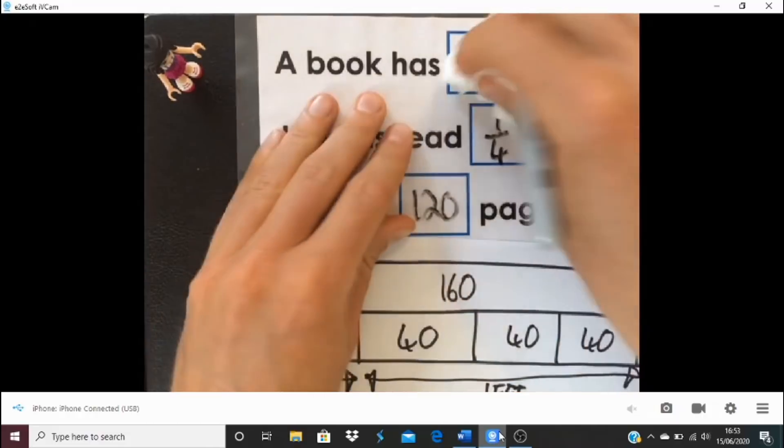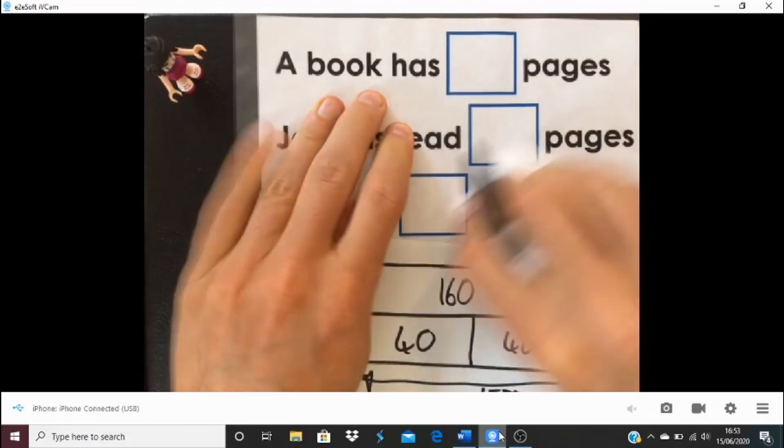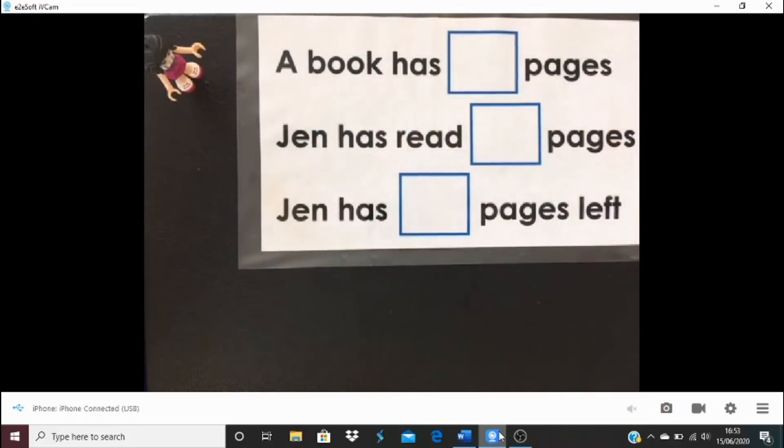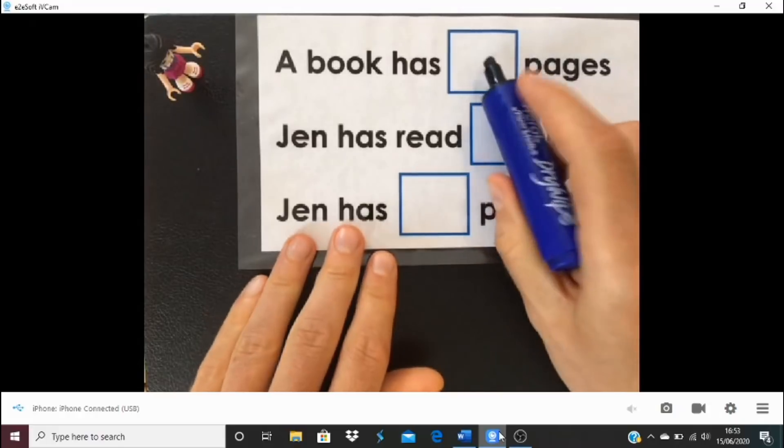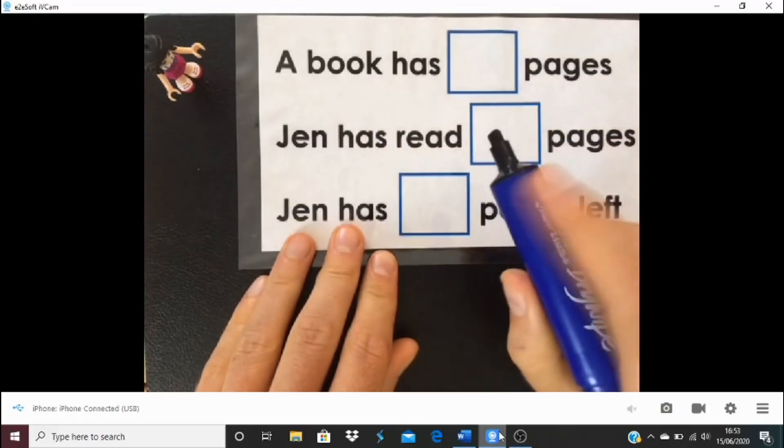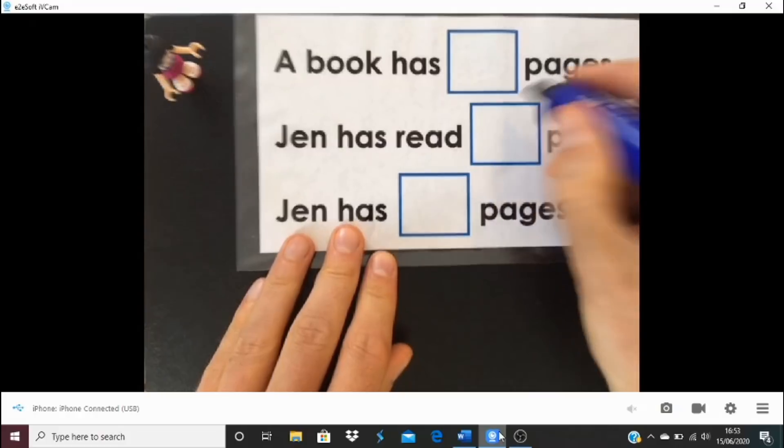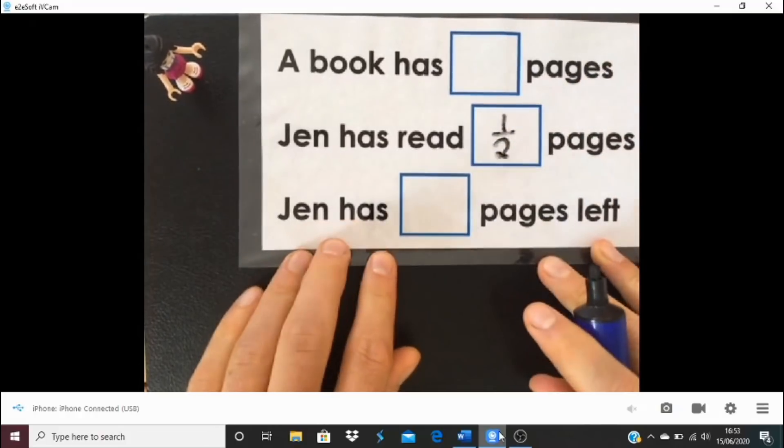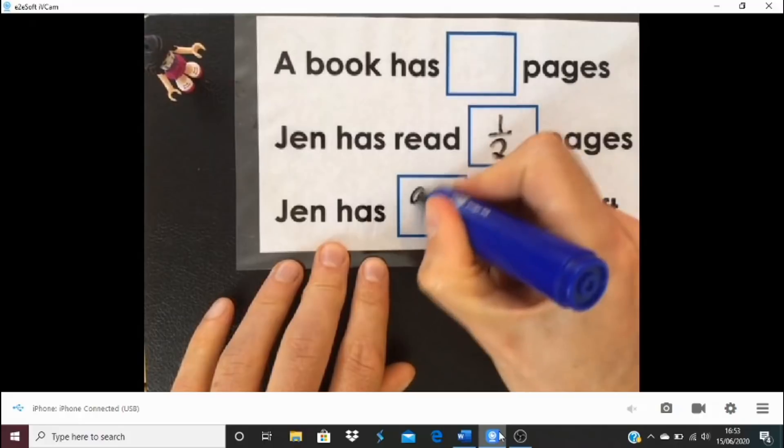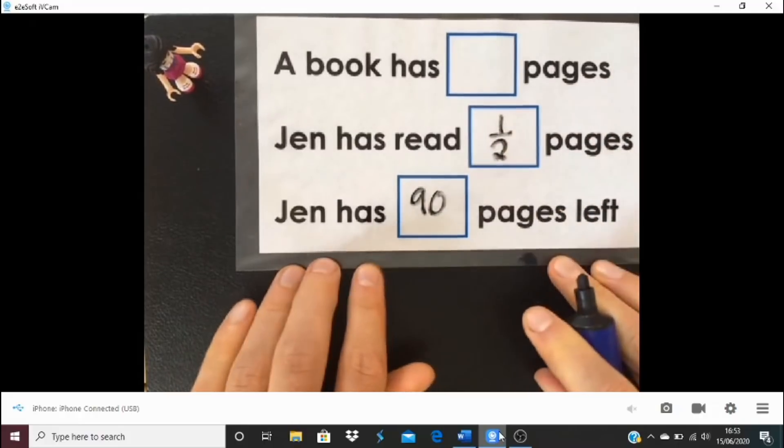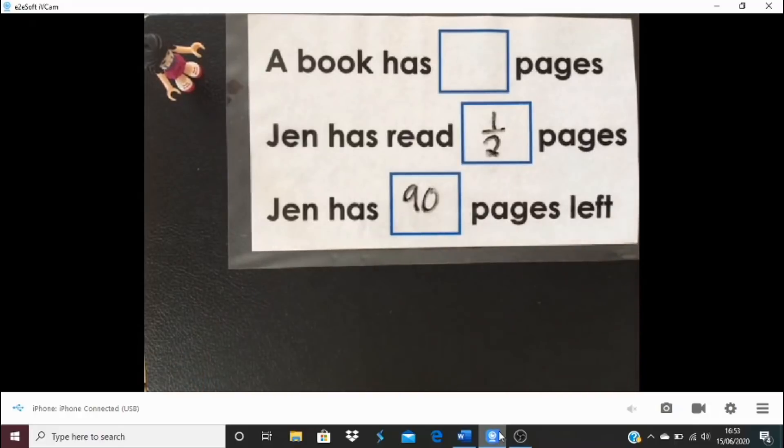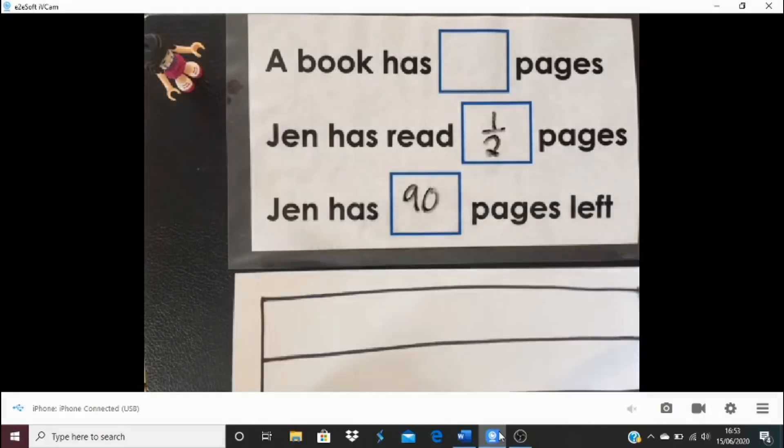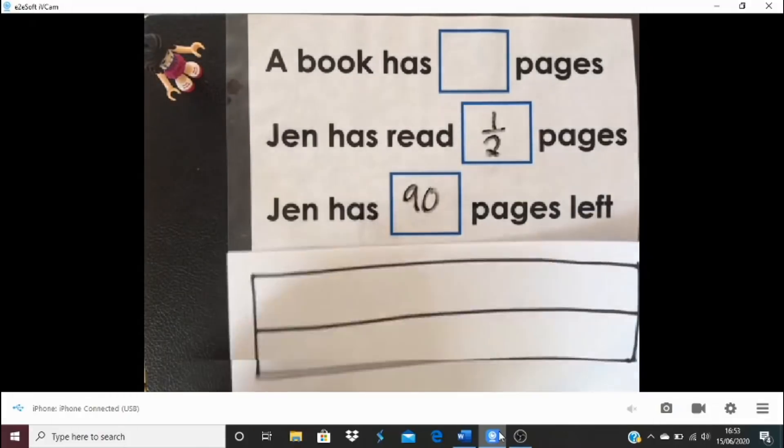Let me give you a slightly different one to have a go at next. Have a go at it, and then we'll look at it. You might benefit from drawing a bar model. Let's say we have a book, and we don't know how long Jen's book is, but she has read half of the pages and she has got 90 pages left. Same as the question before or different? What do you think?